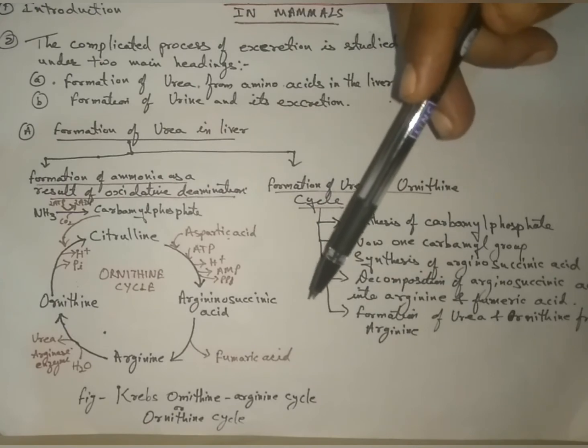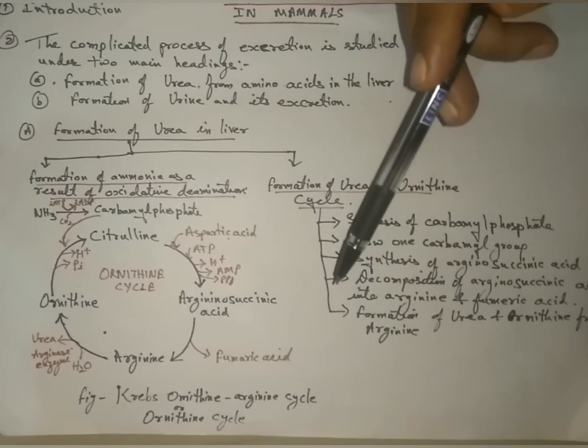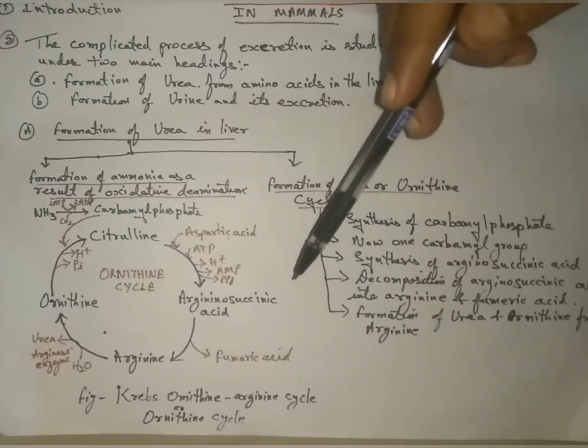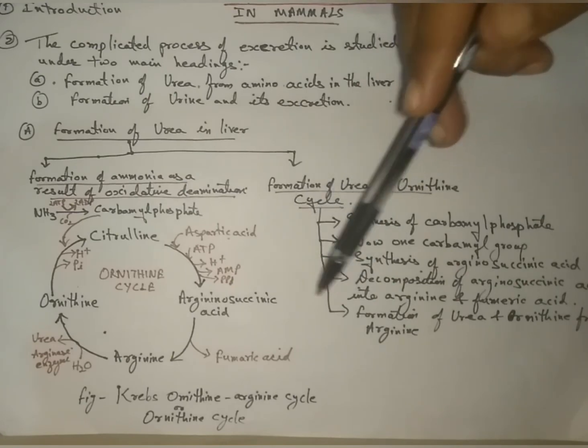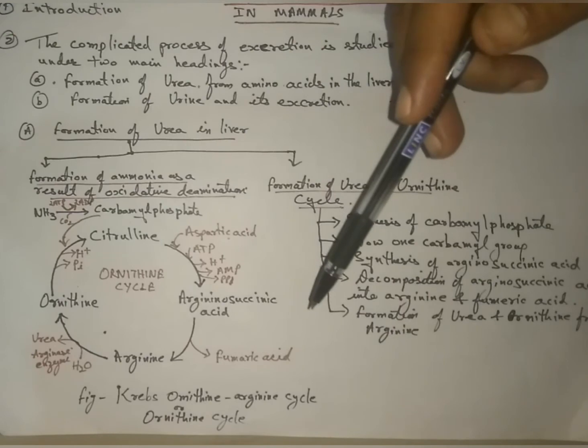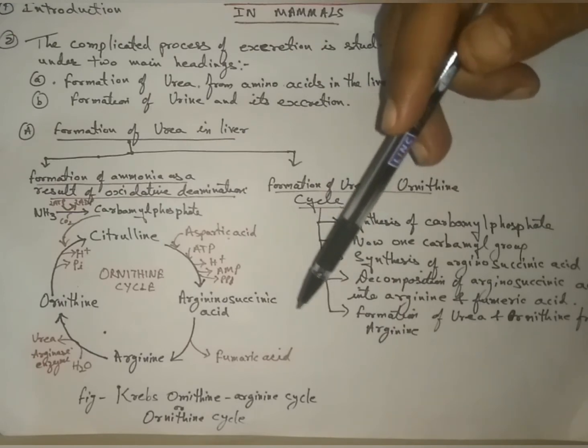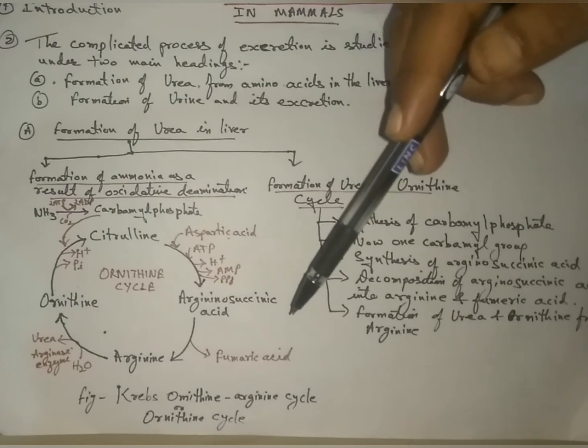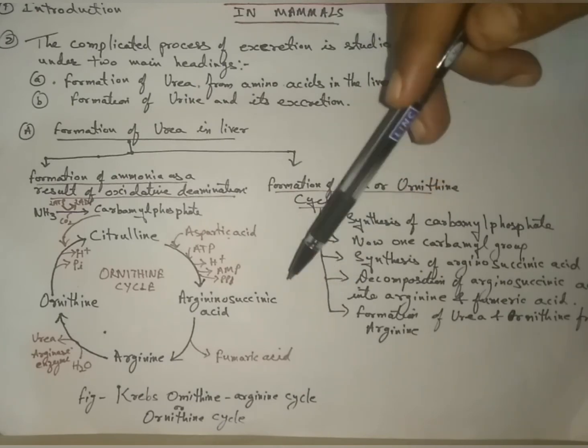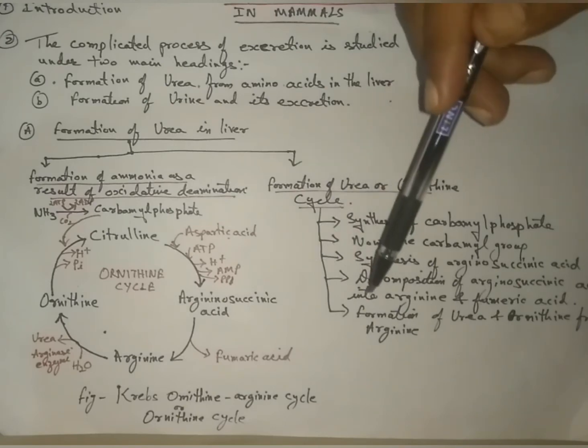Now one carbonyl group: the carbamoyl group separates from carbamoyl phosphate and combines with ornithine to form citrulline. This process is also completed in the presence of a special enzyme called ornithine transcarbamylase.